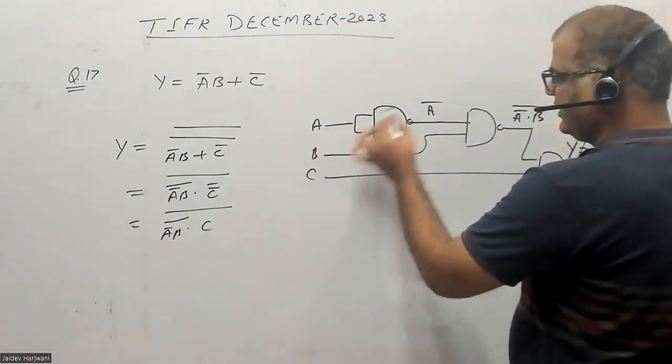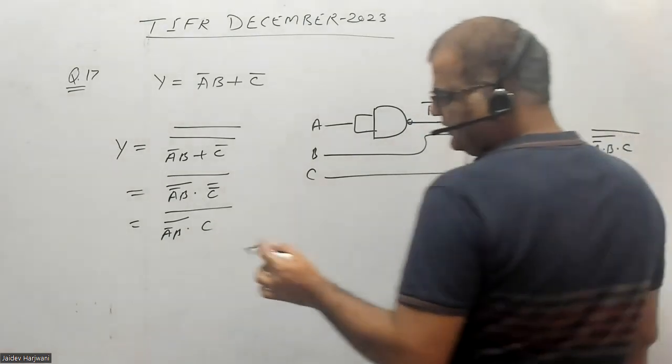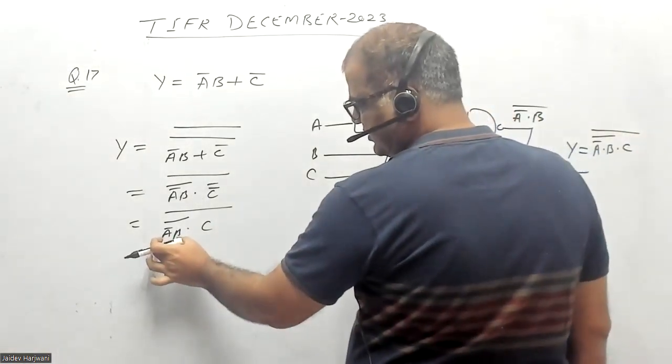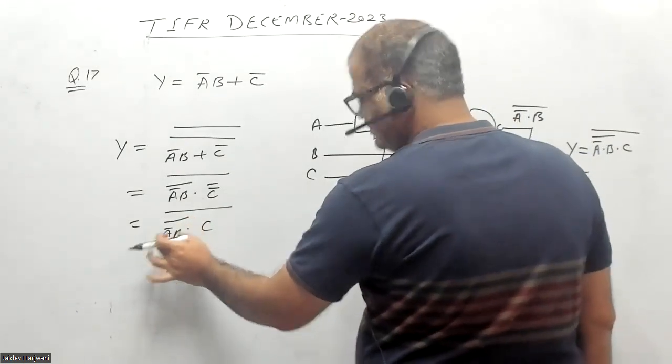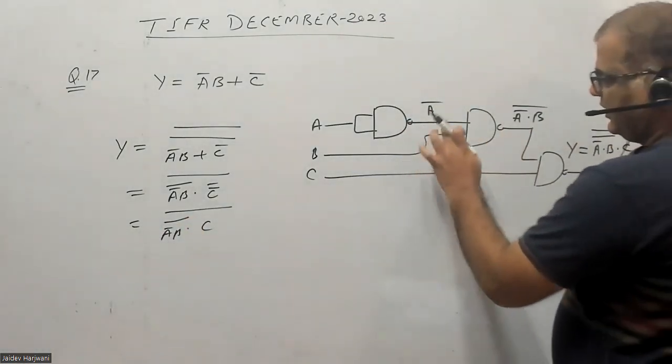Then you have to make these inputs of another NAND gate. This A̅ comes here and B goes to another NAND gate. So you got this.